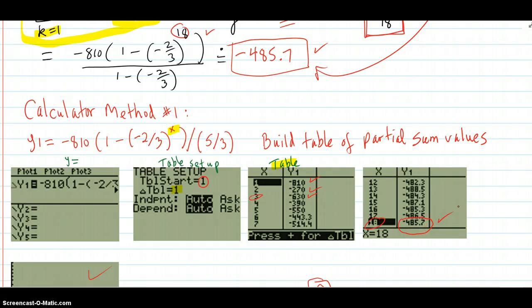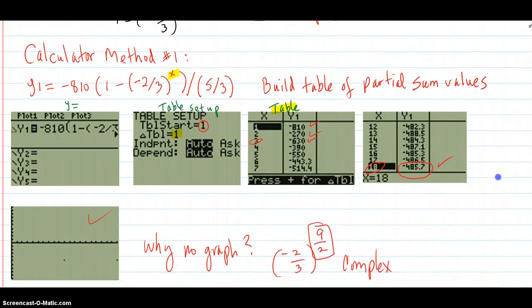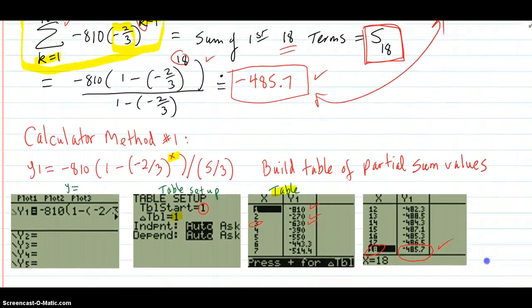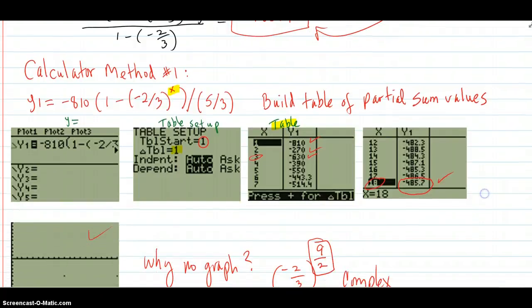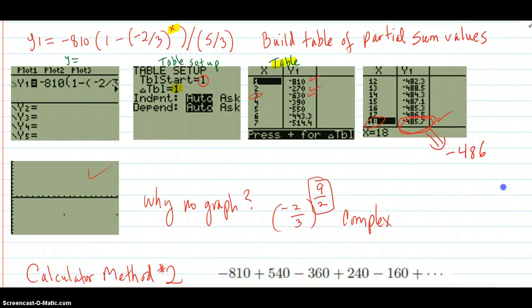And that corresponds to what we calculated here. Okay, so that's one way to get partial sums and to approximate the infinite sum. Because as you can see, these values here are approaching the negative 486.